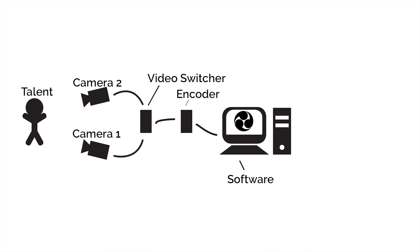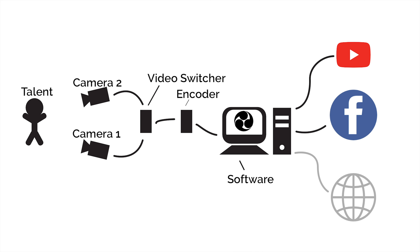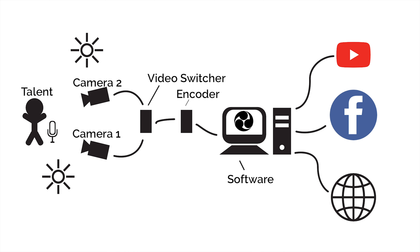Streaming software like OBS can do some of the same functions as a switcher, like cutting between multiple cameras and adding graphics, but it also can output your program to a streaming platform like Facebook, YouTube, or a company website. Let's not forget the support gear like lighting and audio which help your team be better seen and heard. All of these elements are part of the whole picture for live streaming.